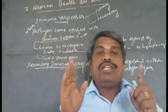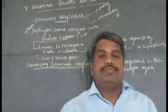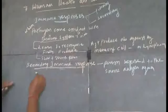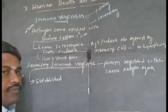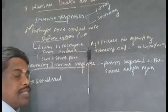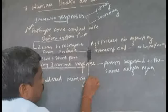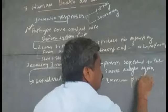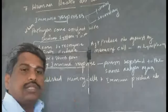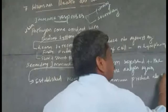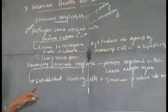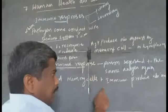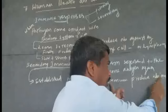During this time, the established memory cells that were generated during the primary response are activated. The immune system produces antibodies immediately. So in the secondary immune response, the established memory cells allow the immune system to produce antibodies immediately.